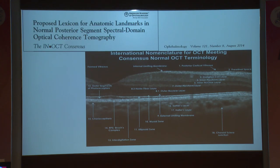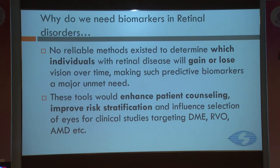It is important that we standardize the anatomical landmarks to be able to read an OCT scan well. This consensual group published in Ophthalmology in 2014 — this paper is excellent and I would recommend you read it. It helps us to see the OCT layer by layer, decipher the layers, and only if we know the normal structure are we able to identify these important biomarkers.